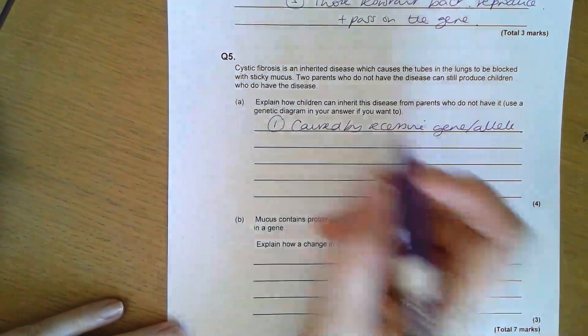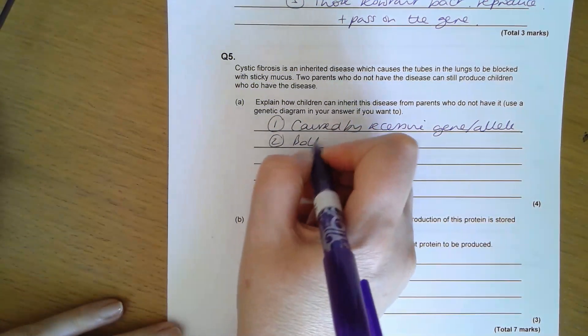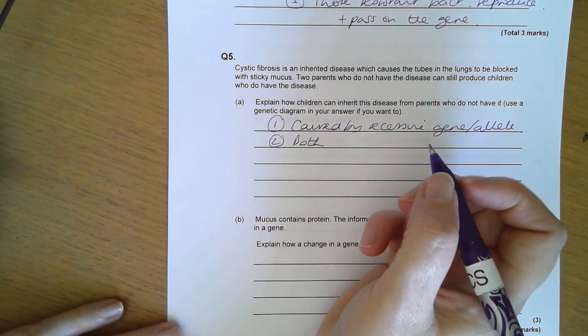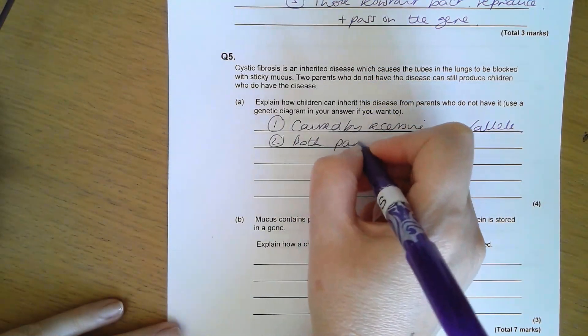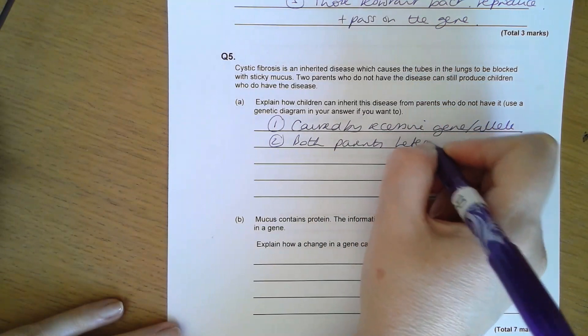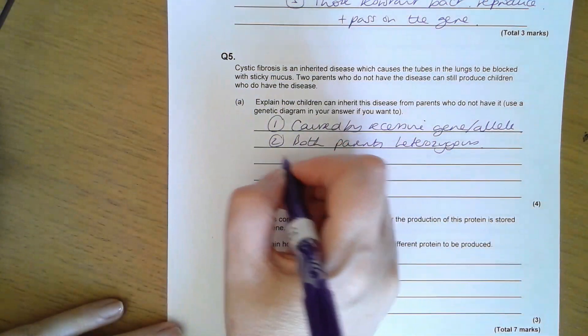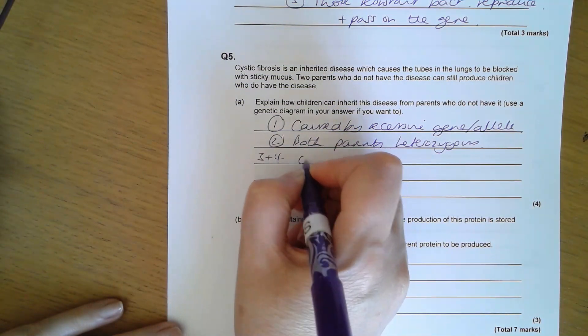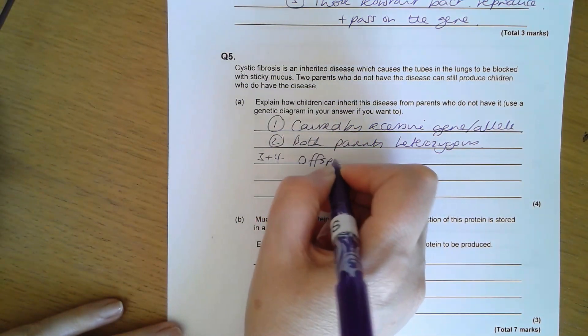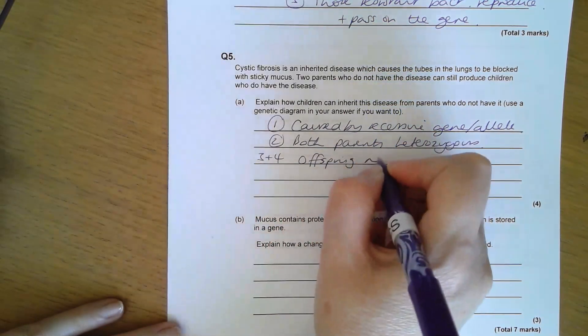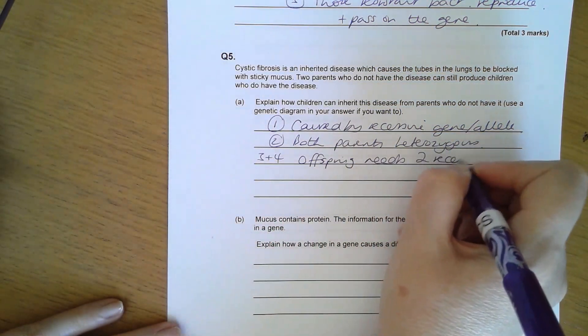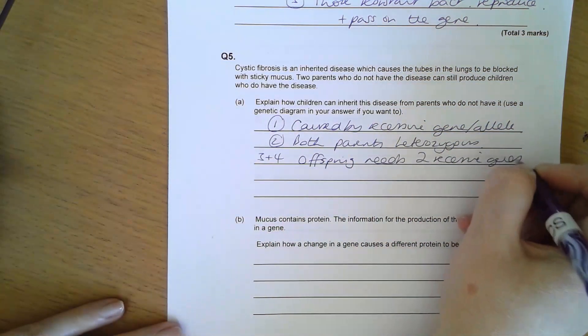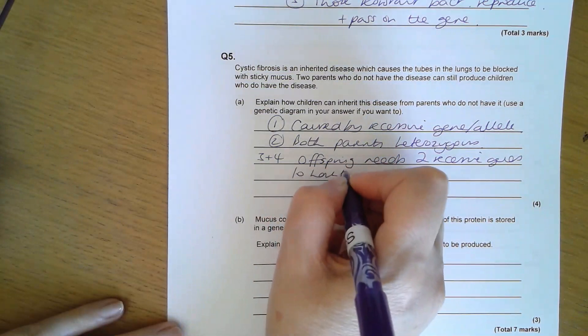Both the parents, if they were able to have a child with cystic fibrosis, must have been heterozygous. Therefore, for the last two marks, the offspring needs two recessives to have the disease.